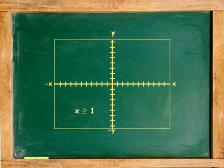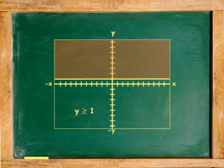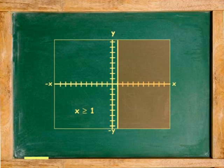Another example, graph the inequality x is greater than or equal to 1. Graphed in two dimensions, an inequality with only one variable is either vertical, x only, or horizontal, y only. In this case it is vertical passing through points x equals positive 1.